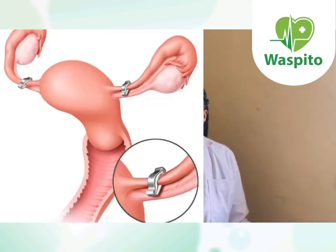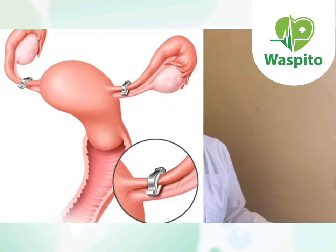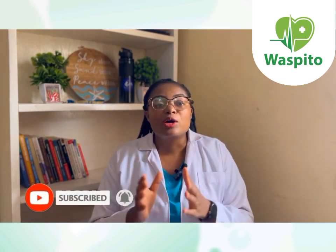Mid-segment blockage occurs, for example, with bilateral tubal ligation — in women who have crossed 35 years old, have had their desired number of pregnancies, and don't want to get pregnant again. That's what we call the permanent sterilization method for women. However, sometimes a woman who has had these blocked tubes still wants to get pregnant, or even gets pregnant after having blocked tubes.